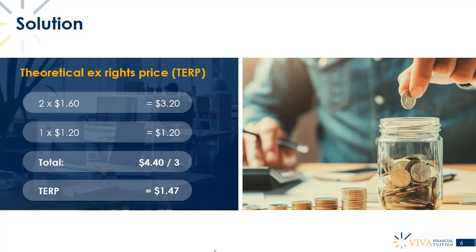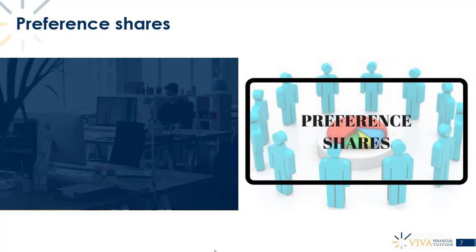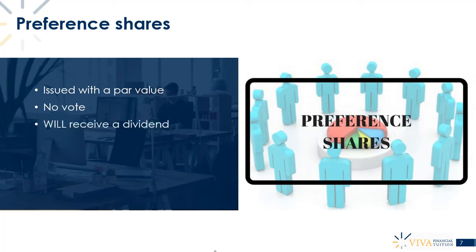The other type of share is preference shares. Like ordinary shares, preference shares are issued with a par value. However, preference shareholders — the investors who buy these shares — do not get a vote. That might make ordinary shares seem better, since ordinary shareholders can participate in running the business, but preference shares have their own advantages.